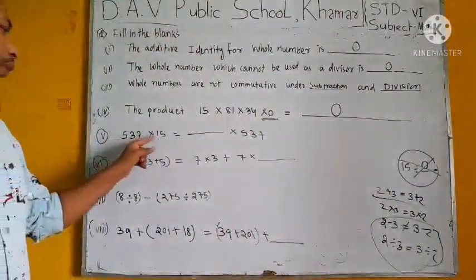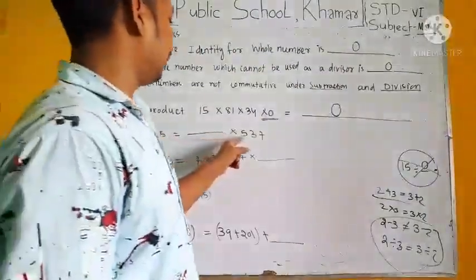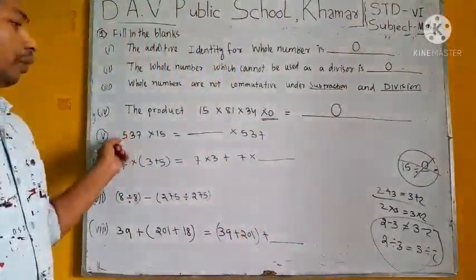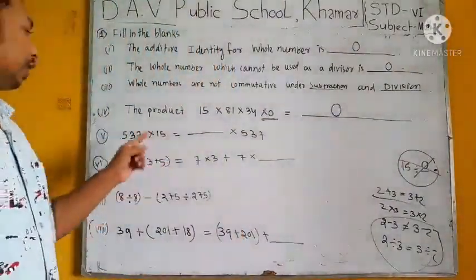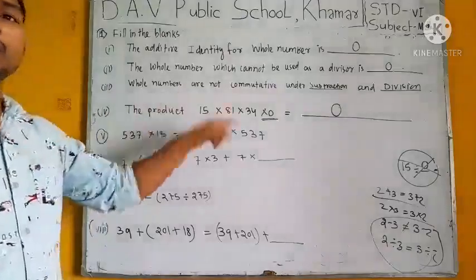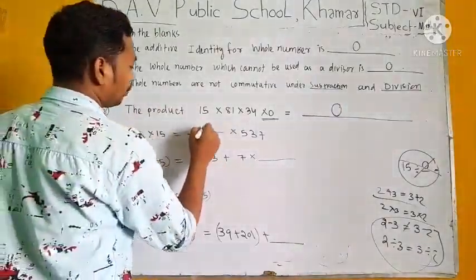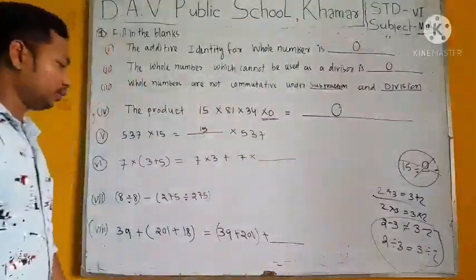537 into 15 equal to blank into 537. Look at here. Multiplication is commutative. That's why a into b equal to b into a. That's why 537 into 15 equal to 15 into 537.